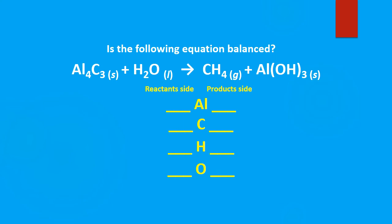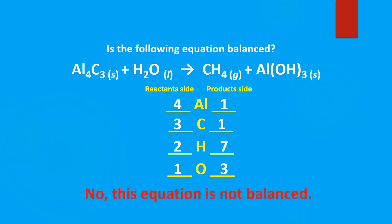So let's look at this one — aluminum, carbon, hydrogen, and oxygen. We look at aluminum on the left — looking at the subscript, we have four. On the product side we have one. Carbon on the reactant side we have three, and on the product side we have one. For hydrogen, we have two on the reactant side, and on the product side we have seven. How do we get that seven? We have four, and we have one here but we have to multiply it by three — that tells us we have three of the hydroxide, and each hydroxide has one hydrogen. So three plus four gives us seven. For oxygen, we have one and three. So that equation is not balanced.